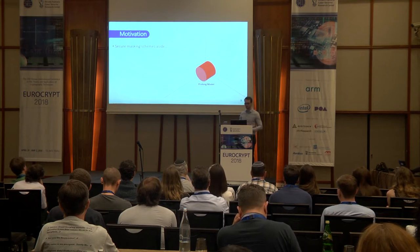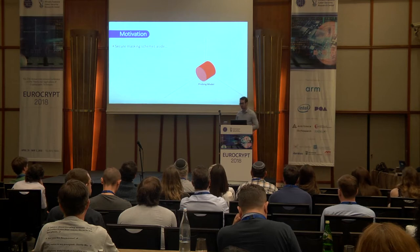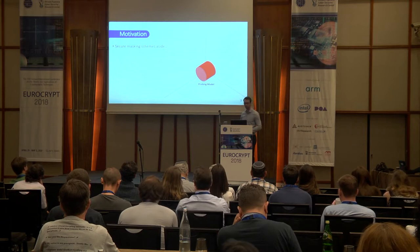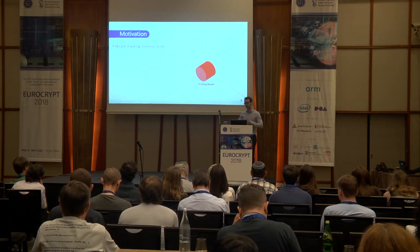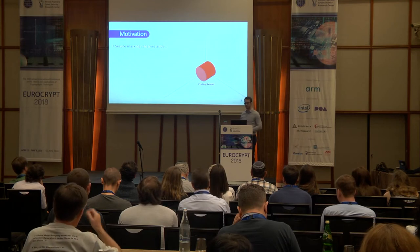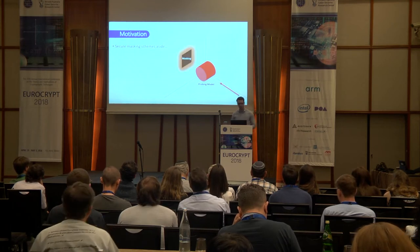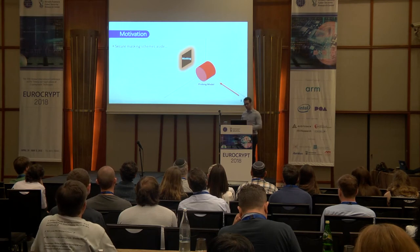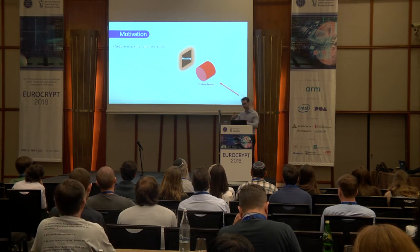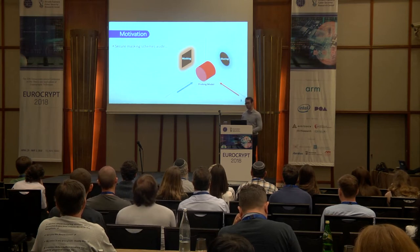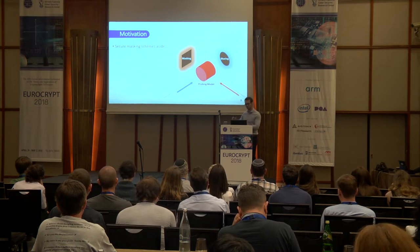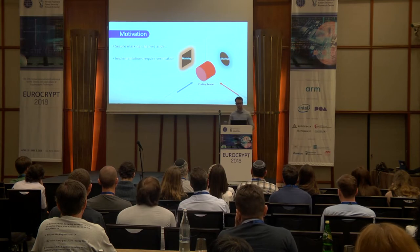A masking scheme is in some way a projection of the rule set from the probing model onto the canvas of a masked implementation — it gives you the rules. But the masking scheme itself is implemented by designers of hardware, so there can be mistakes in the implementation. Also, the digital design flow that takes this circuit as input and processes it further involves many tasks that change your netlist, and things can go wrong there. So implementation requires verification.